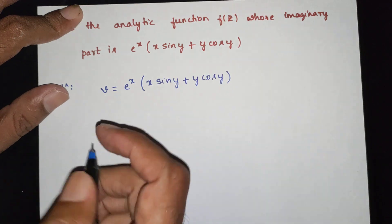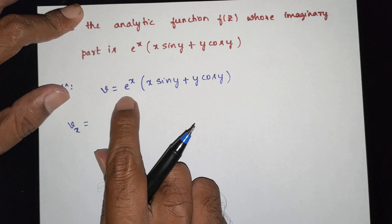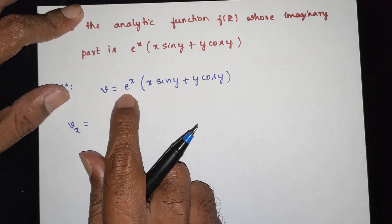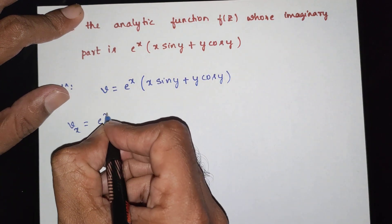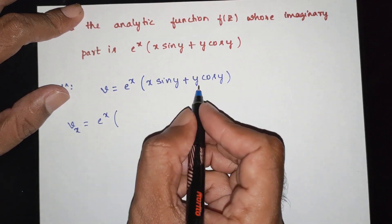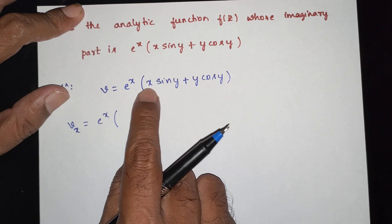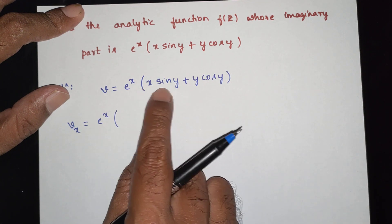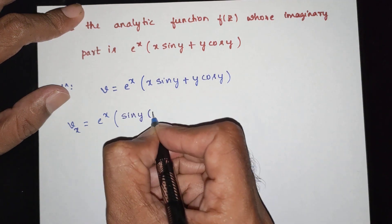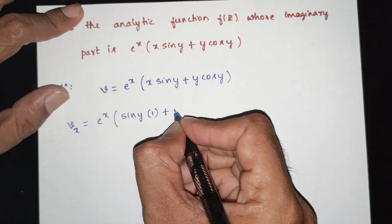Now, differentiate v with respect to x using the product rule. The first term is e power x times x sin y, so applying the product rule: the derivative of e power x is e power x, and sin y with respect to x gives 1, plus the second part gives 0.